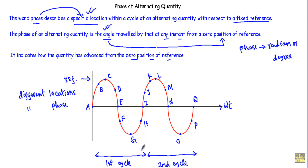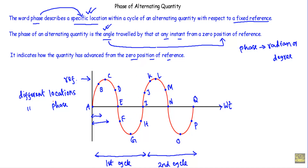As this is our first cycle, the phase of A will be different from B, B different from C, C different from D, D different from E, E different from F, F different from G, and G different from H — because with respect to this reference axis, the angle or distance traveled by point B will not be the same as the distance traveled by point C. So all of them indicate different phases of this alternating quantity.